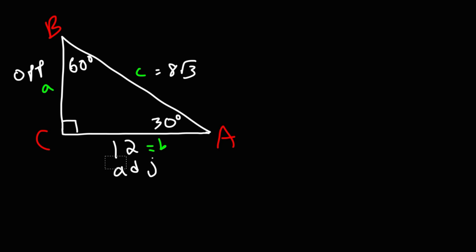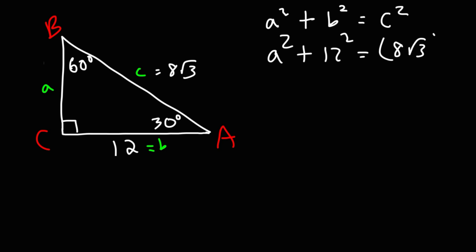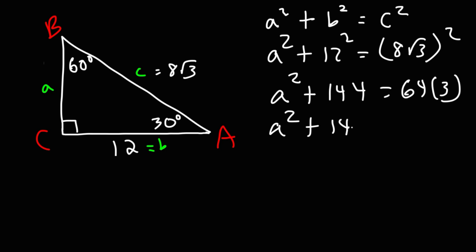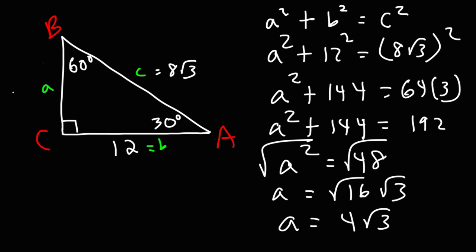Now that we have C and B, we can use the Pythagorean theorem to find A. Using A² + B² = C²: B is 12 and C is 8√3. So 12² = 144, and (8√3)² = 64 times 3 = 192. Then 192 minus 144 equals 48, so A² = 48. Taking the square root: 48 = 16 times 3, and the square root of 16 is 4, giving A = 4√3.